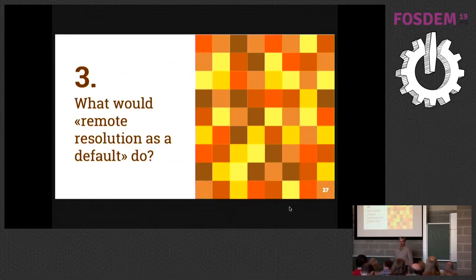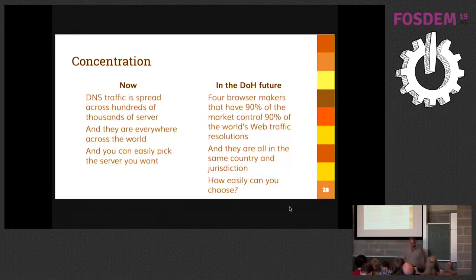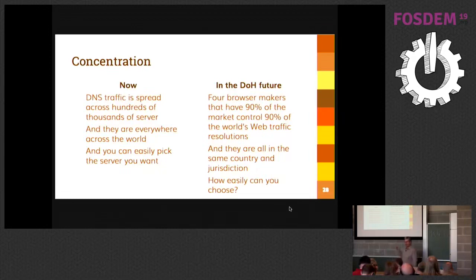If browsers and other applications start using their own service as default, the first thing that would happen is concentration — this is really the problem in my opinion. Currently DNS traffic is spread across hundreds of thousands of servers around the world. If browsers start doing this on their own, over 90% of the world is using four browsers by four companies — Apple, Microsoft, Mozilla, and Google — and they are all in the same country. Currently you can still pick your resolver fairly easily, but in the future it's unclear how much choice you will actually have.